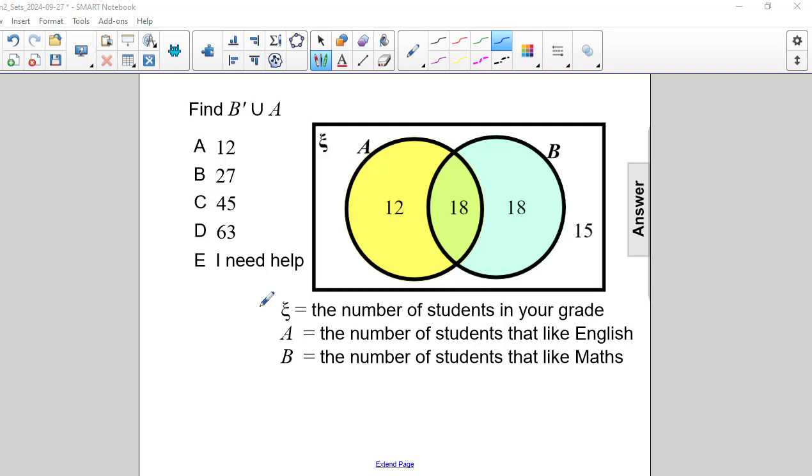The universal set is the number of students in your grade, set A are the number of students that like English, and set B are the number of students that like math.